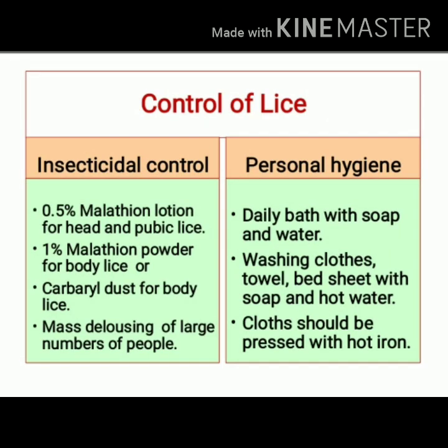How can we control the vector lice? We have two options: insecticidal control and personal hygiene, and both these control measures should be combined together. For insecticidal control of head lice and pubic lice, 0.5% malathion lotion can be used. For body lice, we can use 1% malathion powder or carbaryl dust. At the community level, mass delousing of large numbers of people can be done.